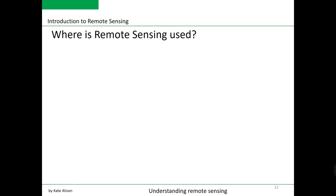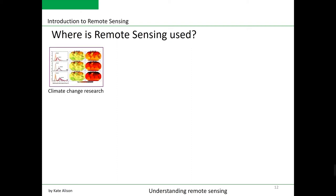So where is remote sensing used? You already have some understanding, but let's talk more about its possible applications. Remote sensing is used in climate change research — all those reports and articles in BBC, CNN, and other major news channels citing climate change are based on climate models, and one of the key inputs to those models is satellite remote sensing data.